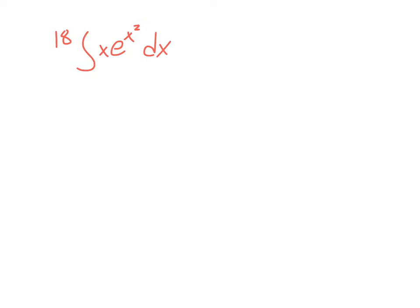We have this fairly complicated problem here. What we're going to do is look for the inner function. This is very related to the chain rule — the idea is very, very similar. We're going to take the inner function here, which I would say is x squared. I kind of look at it as where the problem function is, and it's definitely x squared here. So what I'm going to say is that we're going to substitute x squared with u.